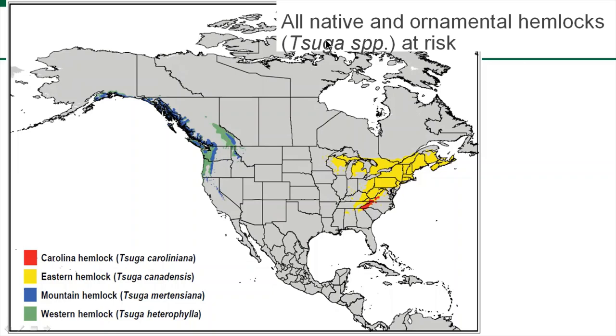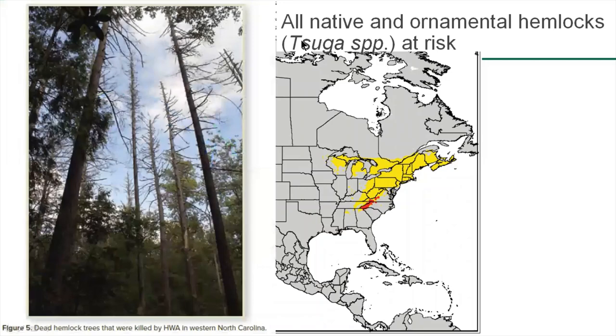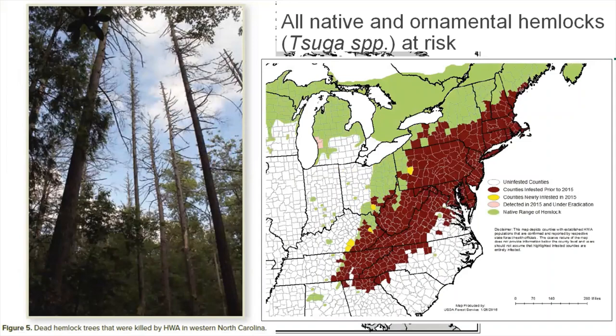There are four species of hemlock native to North America. In native stands of eastern and Carolina hemlock, HWA has been devastating, causing defoliation and tree death. The dark brown and yellow areas on the map show where HWA has been found in the eastern U.S. Two pink counties in Michigan were detected in 2015 and are under eradication. HWA was found in La Porte County, Indiana in 2012 in a couple of landscape trees. Those trees were destroyed and HWA has been eradicated from Indiana, but we're still surveying to protect our small native stands of eastern hemlock and our landscape plantings.